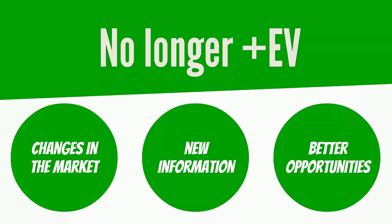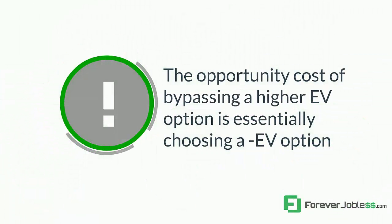We may have discovered better opportunities. So maybe it still is plus EV, but no longer plus EV relative to new opportunities. The opportunity cost of bypassing a higher EV option is essentially choosing a negative EV option, no matter what your sunk cost is. It's sunk cost. It's irrelevant.